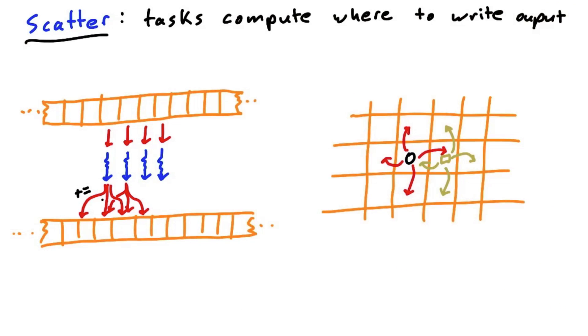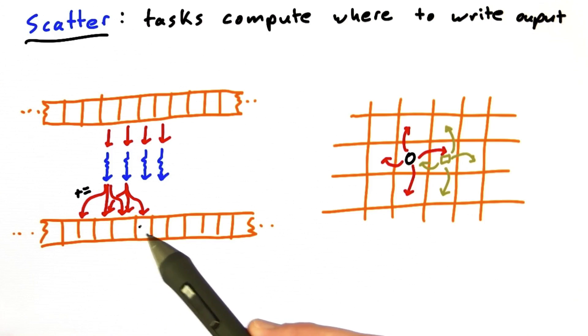You can see already a problem that we're going to have with scatter. You've got several threads attempting to write to the same place at more or less the same time. This is something we'll have to talk about later.